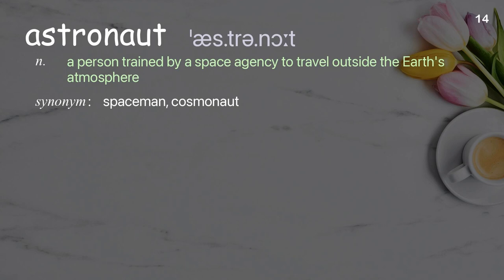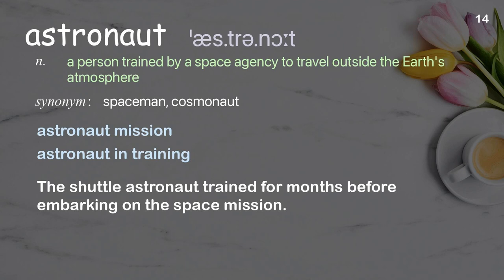Astronaut: a person trained by a space agency to travel outside the Earth's atmosphere. Examples: astronaut mission; astronaut in training. The shuttle astronaut trained for months before embarking on the space mission.